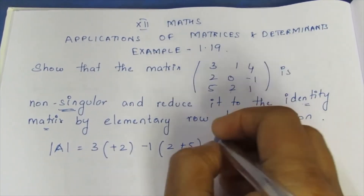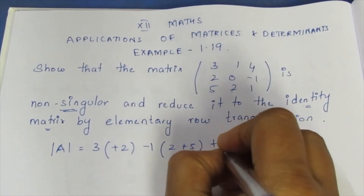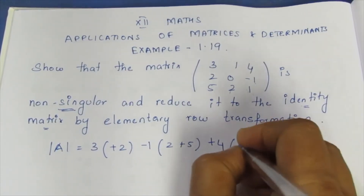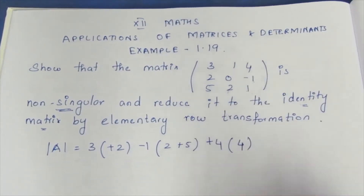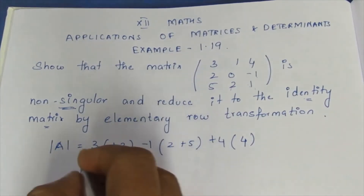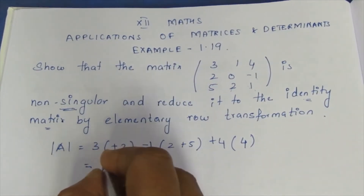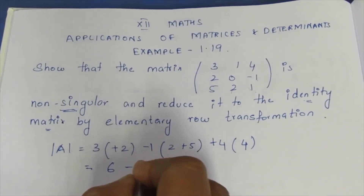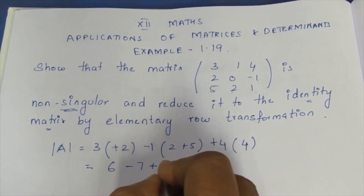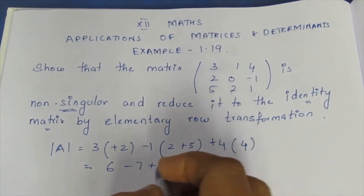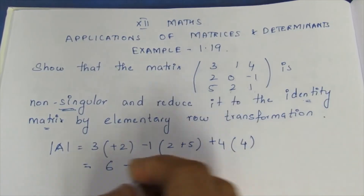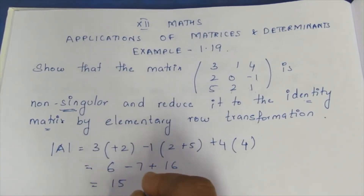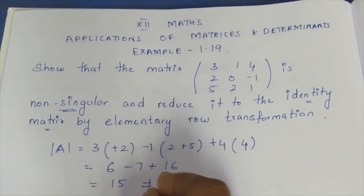Next term: the row and column multiply gives 4, which is 4. Then we get 6, then 7. So we have minus 7 plus 16. The result is 5, which gives us 15 in total.